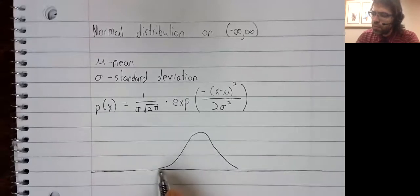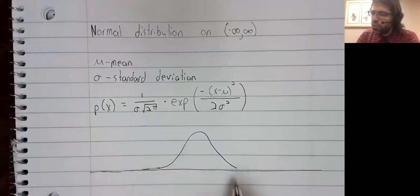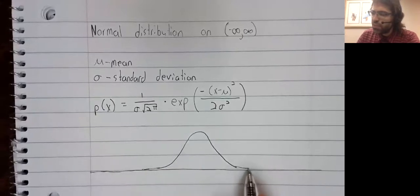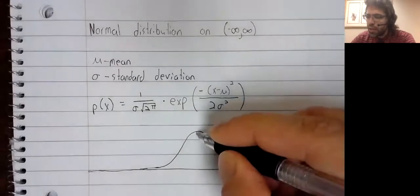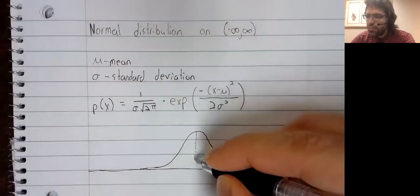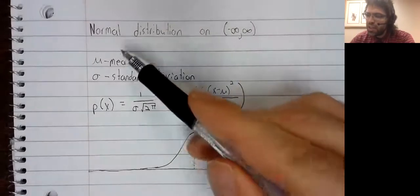So this is always positive, but it approaches these asymptotes quite quickly. And this value here is the mean.